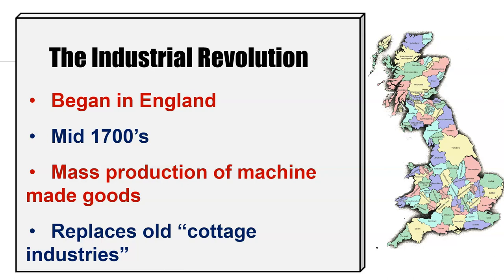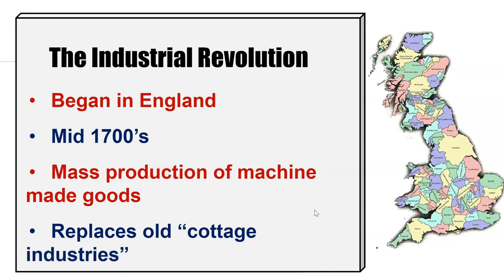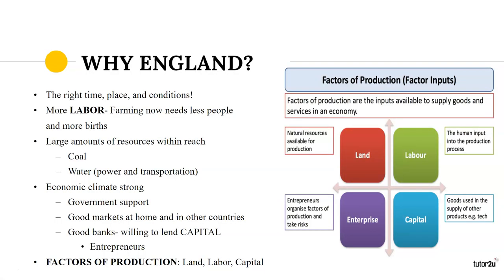The Industrial Revolution replaces what is called the old cottage industries, meaning it moves away from the idea that in England — and elsewhere around the world — people were making things on their own family farms or at their own houses to basically subsist their lives. They weren't really dependent on other people or companies to get what they needed — it was all done in their cottage, on their farms, or within their families. Throughout the Industrial Revolution, people start moving away from the farms and into more urban areas.